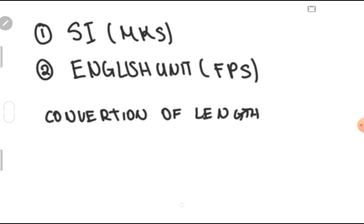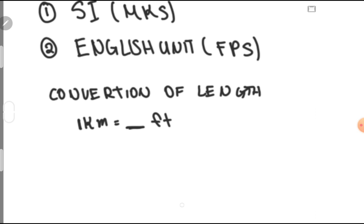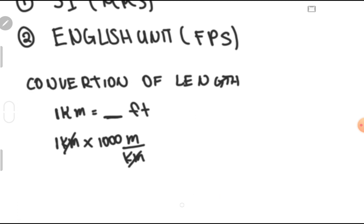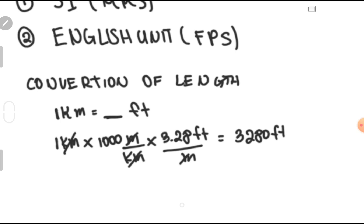Our first example: let us convert 1 kilometer to feet. We know that 1 kilometer equals 1,000 meters — so 1,000 meters per kilometer. We also know that 1 meter equals 3.28 feet. Canceling out the units, we get 3,280 feet. There are 3,280 feet per kilometer.